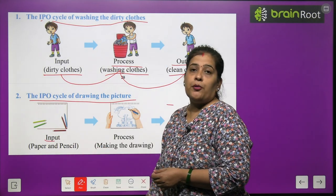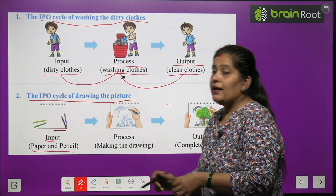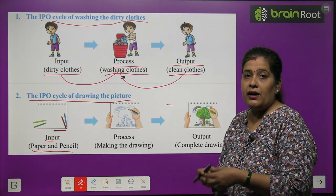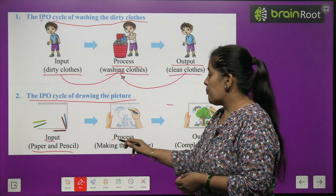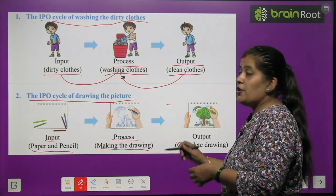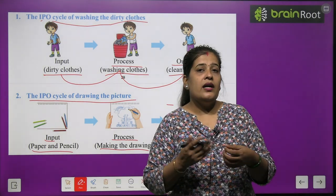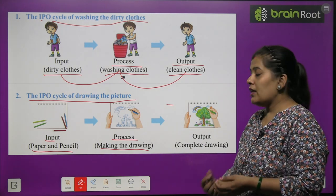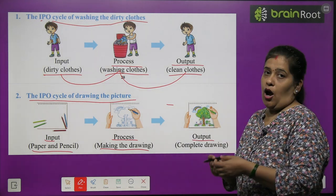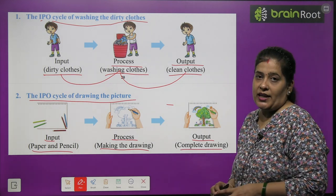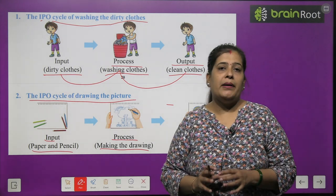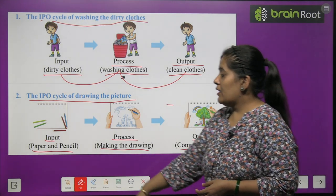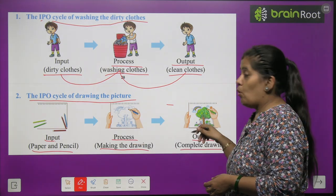Input: you can start using paper and pencil. Process: making the drawing — we draw the drawing. After that, we get the output. Output is the complete drawing. When we make the drawing complete, that is what we get from the output. So, we followed the IPO cycle for making a drawing.